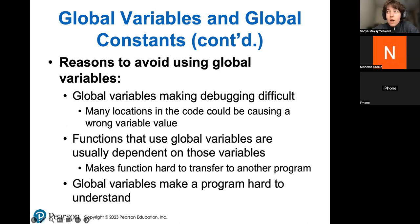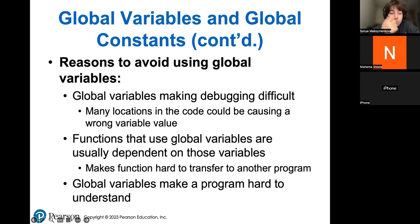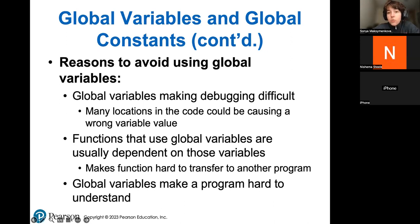However, in some cases global variables are useful. For example, if you need to calculate taxes or calculate somebody's income, that thing stays the same forever. The federal tax and the state tax will not change, so you might want to use a global variable for that if you need to write a program that calculates something like that.